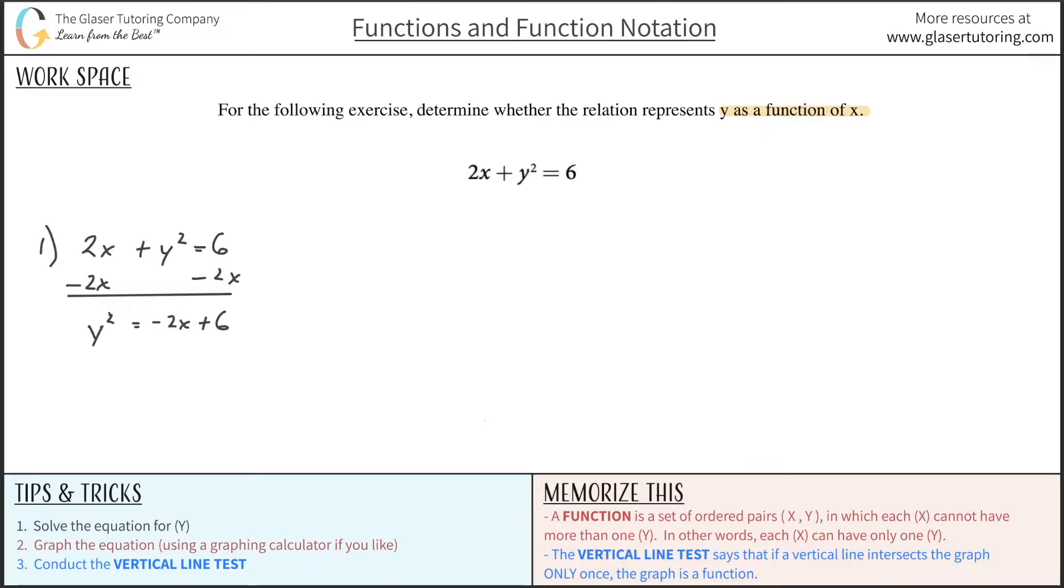And then to solve for just y, I don't want to know y squared, I want to know just y. We have to take then the square root of both sides. Now you have to remember this: anytime you take the square root of a squared value, you will always get the positive and negative value for that thing inside of the radical.